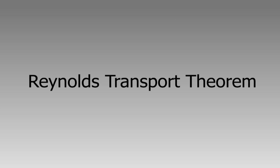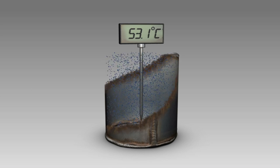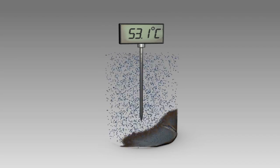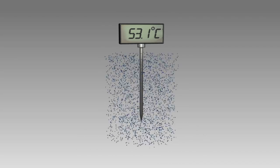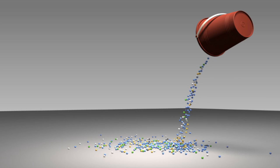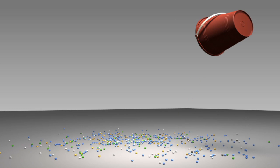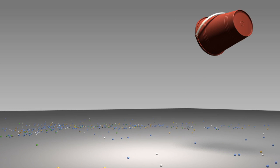The Reynolds transport theorem is used in fluid mechanics to relate a specified volume of some fluid property to a collection of fluid molecules with the same property. It is needed because in fluid mechanics we rarely follow the exact same collection or system of fluid molecules as they travel along some streamline. It is practically impossible to do so due to the millions of fluid molecules present in a system, even of a small size.